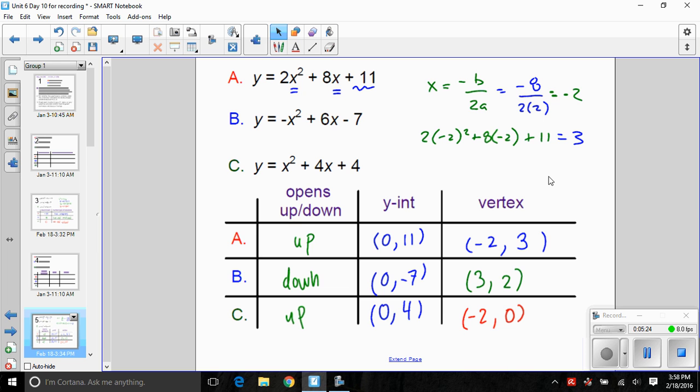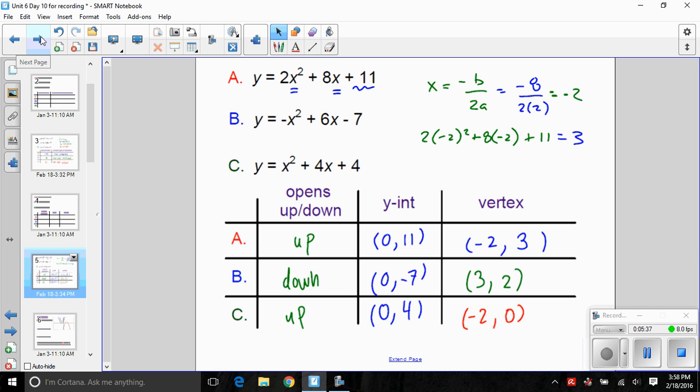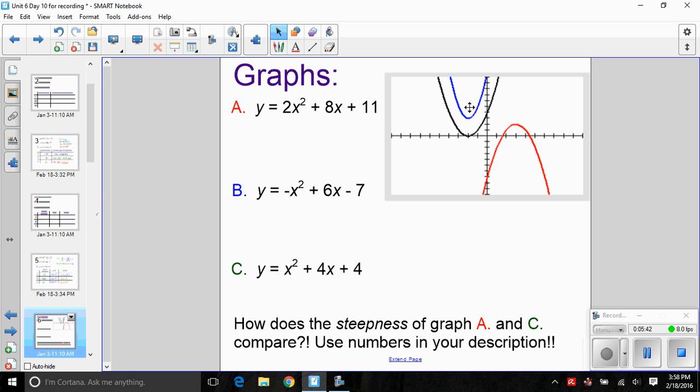Lastly, we can compare the steepness. Let's take a look at these graphs. A opens up with y-intercept 0, 11 and vertex negative 2 comma 3. So there we have equation A. Equation B opens upside down, there's our red graph, and that looks like it has our two irrational solutions. And then C is the black parabola, and we see that's the special case where we've got one x-intercept, one real rational solution.